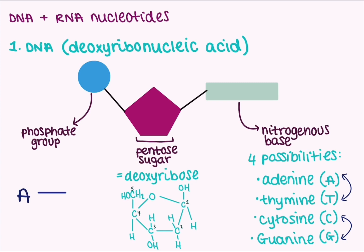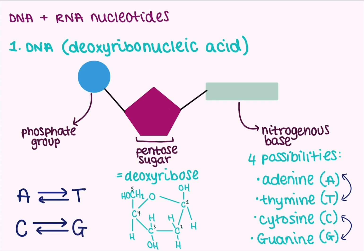Adenine and thymine are complementary to each other — they'll always bond with each other, forming hydrogen bonds on antiparallel strands. The same applies to cytosine and guanine, which are complementary to each other and also form hydrogen bonds. It is the hydrogen bonding between these complementary base pairs — A with T and G with C — that holds the two strands of DNA together to form the double helix.